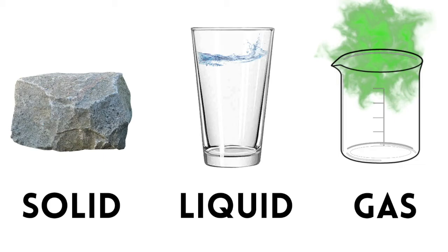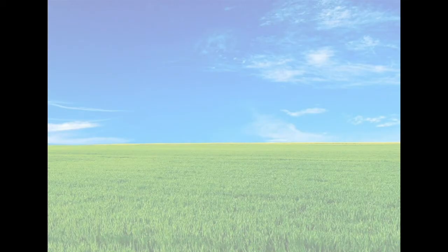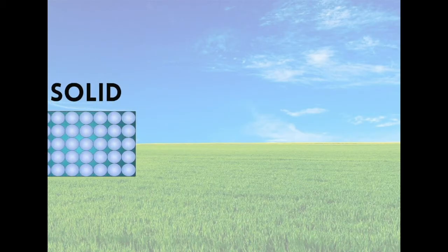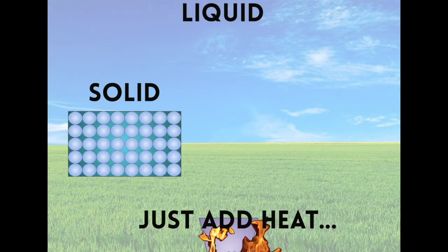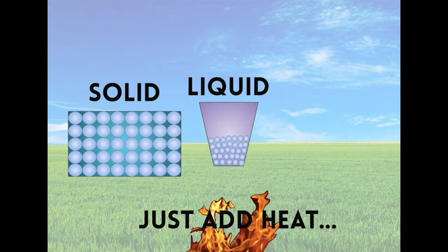A solid is rigid, so its particles do not move past one another. A liquid assumes the shape of the container it occupies, is not easily compressible, and flows easily because the particles move past one another. A gas assumes the shape and volume of its container, is compressible, and flows easily.